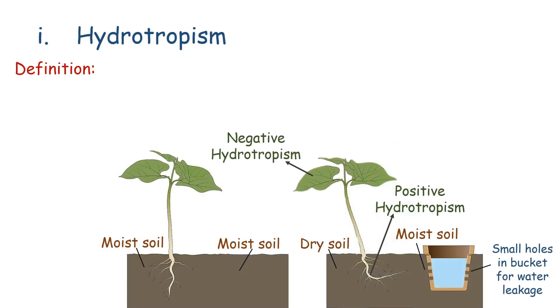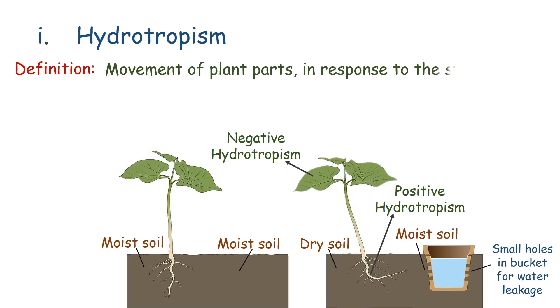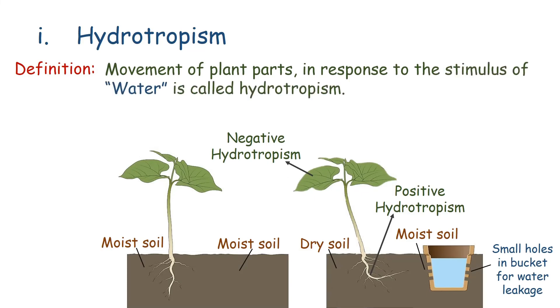Movement of plant parts in response to the stimulus of water is called hydrotropism. Growth of roots towards water is positive hydrotropism, and growth of shoots away from water is negative hydrotropism.